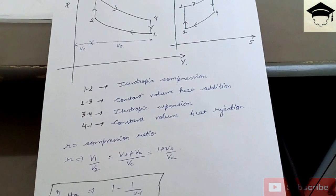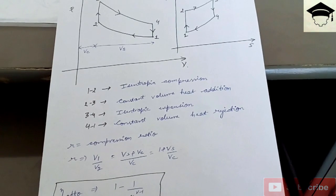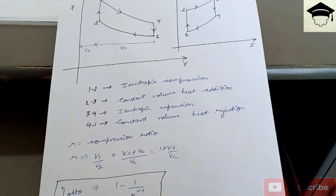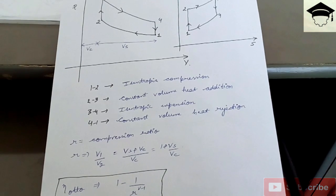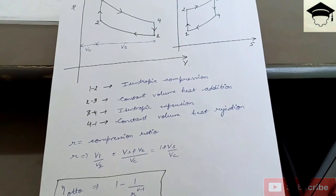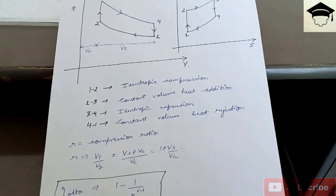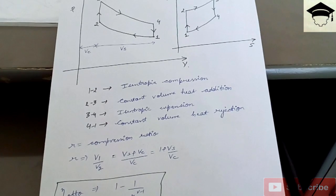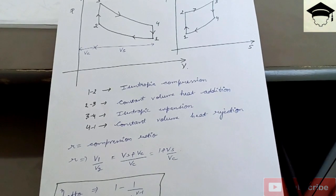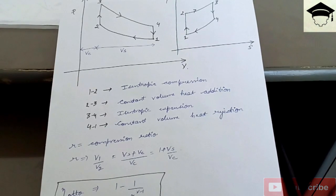The efficiency of the Otto cycle is given by 1 minus 1 upon R to the power gamma minus 1, where gamma is the ratio of specific heat at constant pressure to specific heat at constant volume, that is CP upon CV. Gamma is 1.414 and R is the compression ratio V1 by V2.